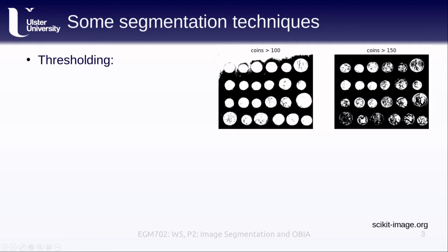We've seen some segmentation techniques already. For example, we've worked with thresholding in the different practicals. You've seen something called Otsu's method, which uses the histogram distribution of an image to help partition it into dark and light pixels. You can see what that looks like for our coin example here. If we're using a threshold value of 100, every pixel above 100 belongs to the bright class and every pixel below 100 belongs to the dark class. With this threshold value we do a decent job of picking out the individual coins, but we also identify quite a bit of the background.